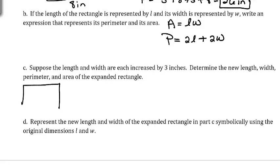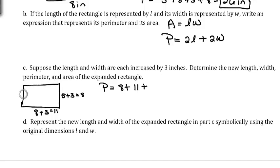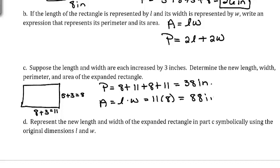In our original rectangle the length was 8, so we add 3 to get 11, and the width was 5, so we add 3 to get 8. The perimeter is 11 + 8 + 11 + 8 = 38 inches. The area is length times width: 11 times 8 equals 88 inches squared.